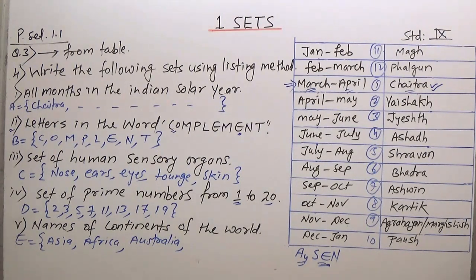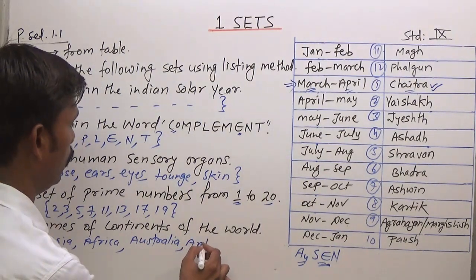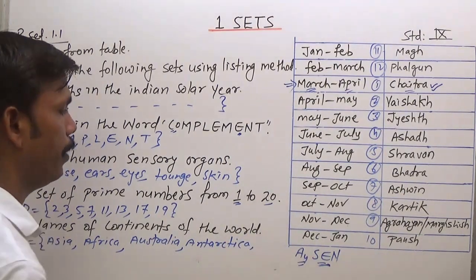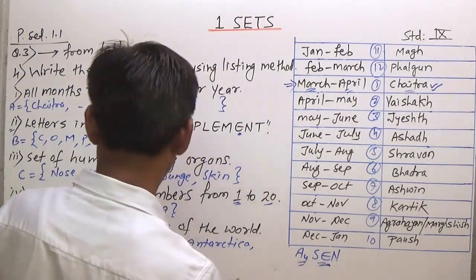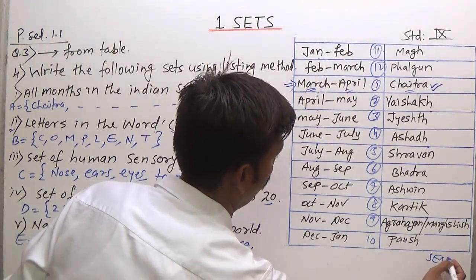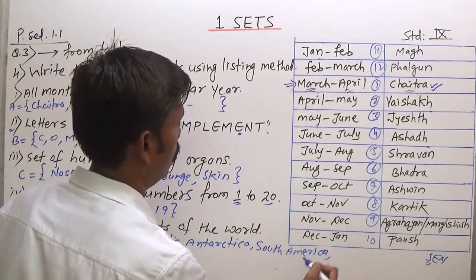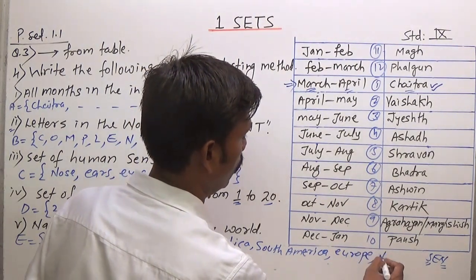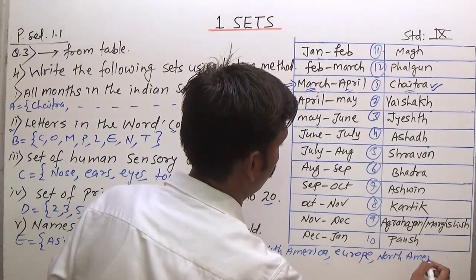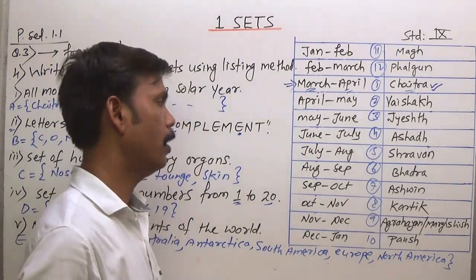Fifth question: set of continents. The continents are Asia, Africa, Australia, Antarctica, South America, North America, and Europe — seven continents in total.